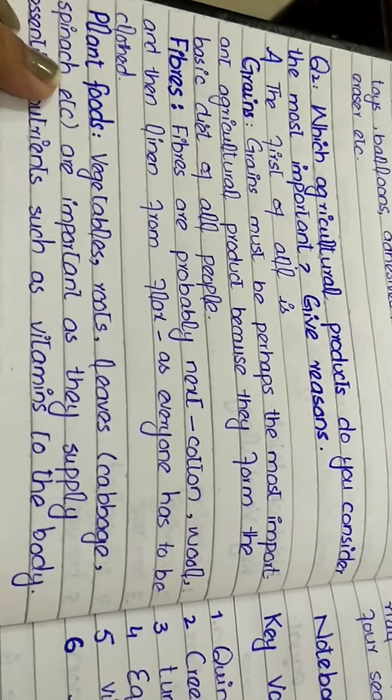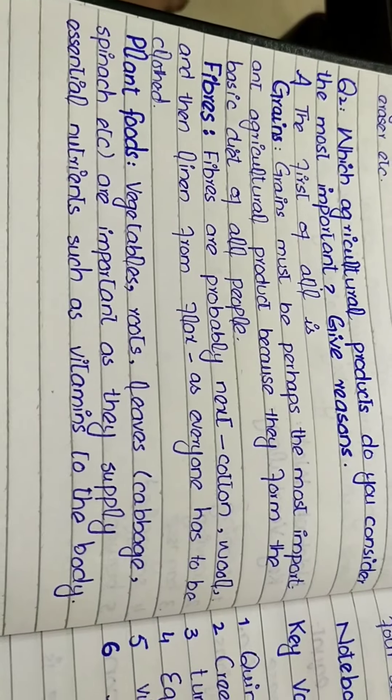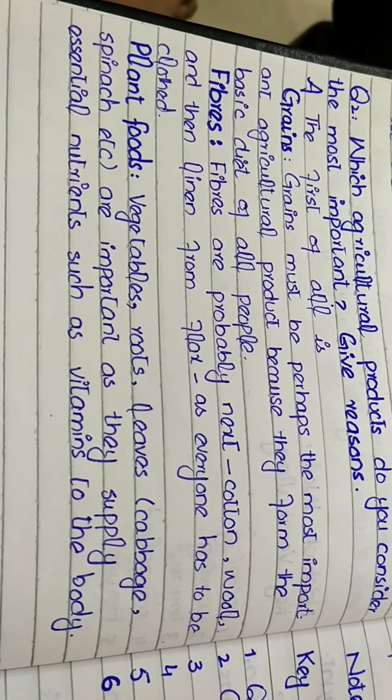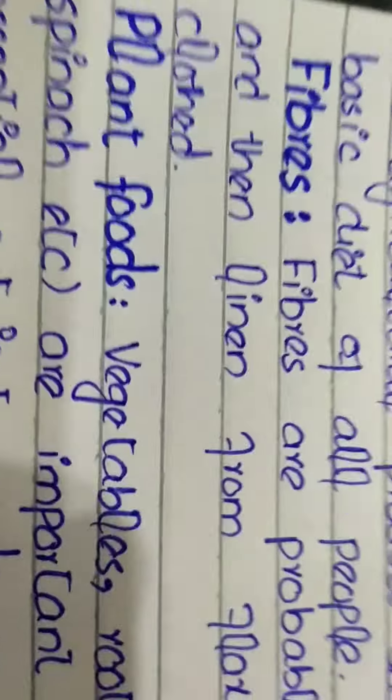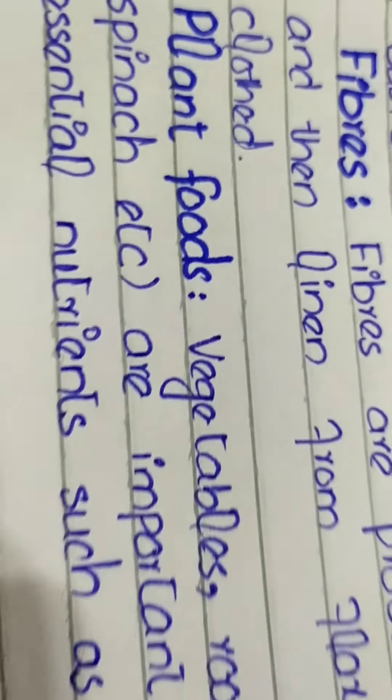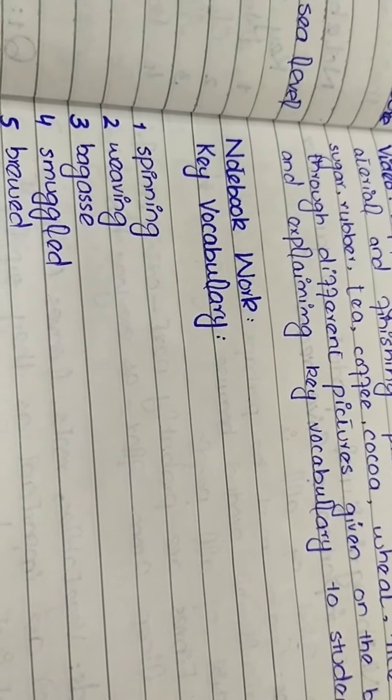You will note down these vocabulary words in your notebook: spinning, weaving, bagasse, smuggled, and brewed. The first question is: find out what other products are made from natural rubber. Products made from natural rubber, other than those mentioned in the book, include gloves, toys, balloons, adhesives, rubber bands, pencils, and erasers.